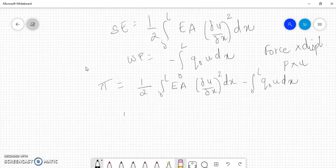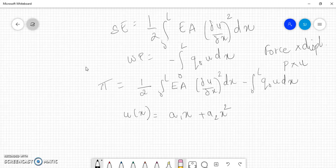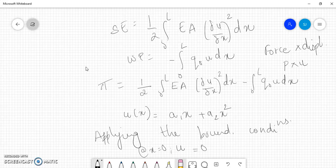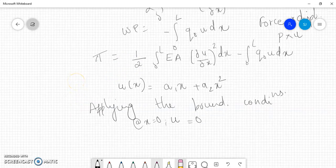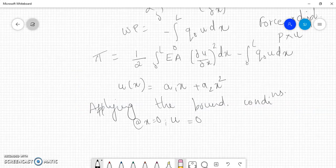In Rayleigh-Ritz method, we assume a displacement function. So let us assume it as u = a1x + a2x². Applying the boundary conditions, we know that the left hand side is fixed. So at x equals 0, the displacement is 0. Let me call this equation 1 and this equation 2.